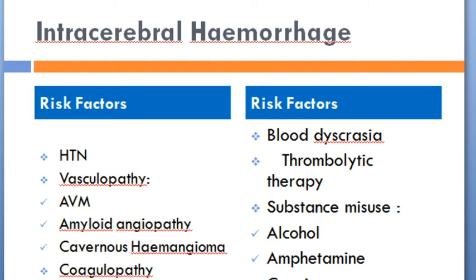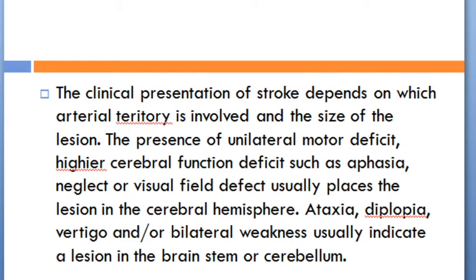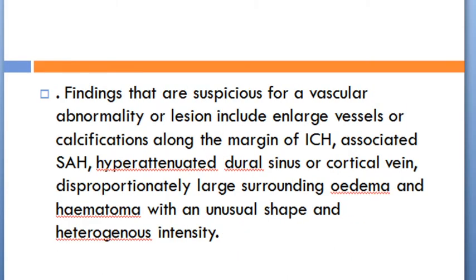Substance misuse such as alcohol, amphetamine, and cocaine are also risk factors. The clinical presentation of stroke depends on which arterial territory is involved and the size of the lesion. Unilateral motor deficit or higher cerebral function deficits such as aphasia, neglect, or visual field defect usually places the lesion in the cerebral hemisphere. Ataxia, diplopia, vertigo, or bilateral weakness usually indicate a lesion in the brainstem or cerebellum. Findings suspicious for a vascular abnormality include enlarged vessels, calcification along the margin of intracerebral hemorrhage, associated subarachnoid hemorrhage, hyperattenuated dural sinus or cortical vein, disproportionately large surrounding edema, and a hematoma with unusual shape and heterogeneous intensity.